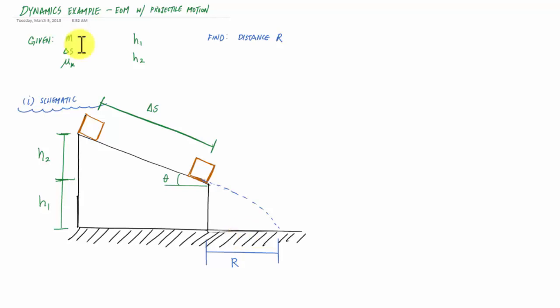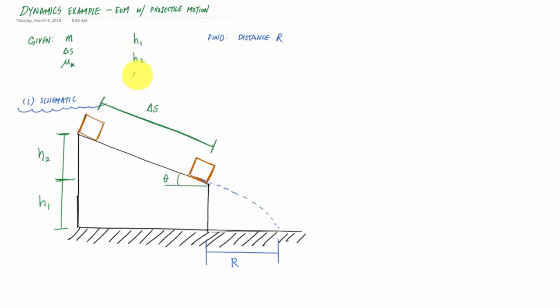In this case, our mass is going to be unknown. Our distance traveled on the incline will be unknown. The coefficient of kinetic friction is going to be known. We'll have h1 and h2, which are the heights here. This angle theta is also going to be a known variable. And what we want to find is this distance R. I'll try to keep color-coordinated — everything in green will be known, and everything in blue will be something we need to solve for.